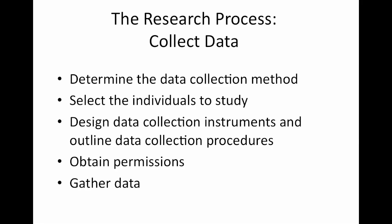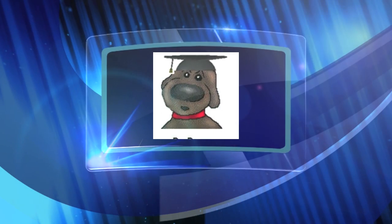To collect data, you're going to have to determine the data collection method, which is determined basically by the type of study you conduct and the type of research that you use. Select individuals, design the data collection instruments, and outline your procedures. You're going to have to obtain permissions to collect your data, and that should include an institutional review board — IRB — and then you're going to gather the data.